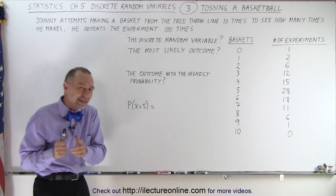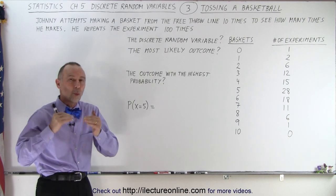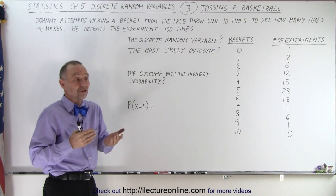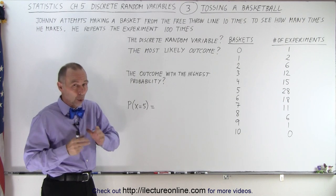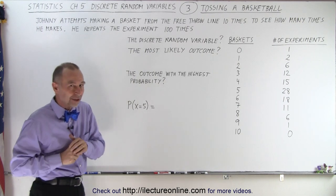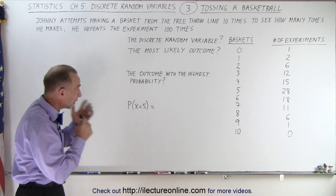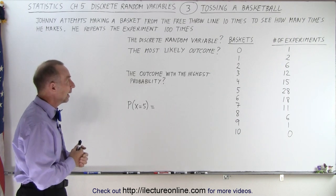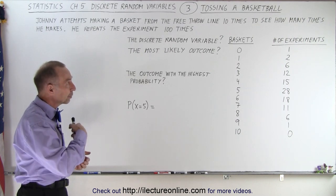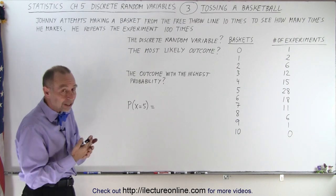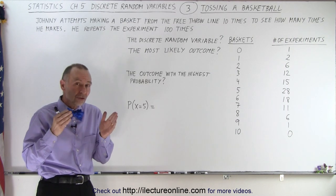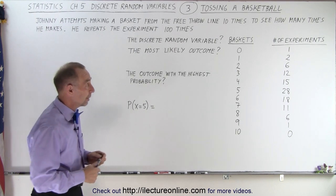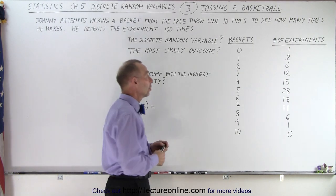Then he repeats that experiment 100 times, so essentially he's going to toss that basketball 1,000 times — 100 times with 10 attempts each. And then we count how many baskets he actually makes out of each set of 10 attempts.